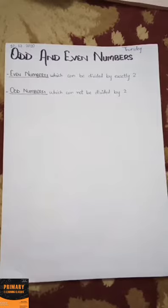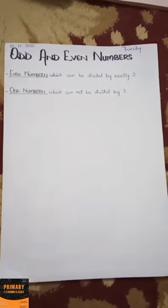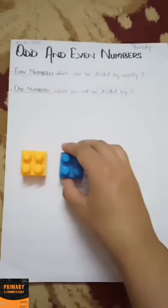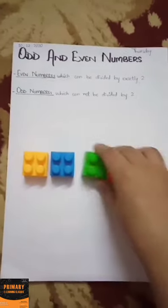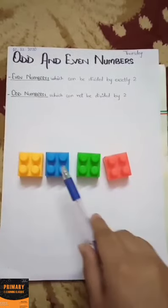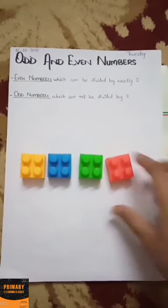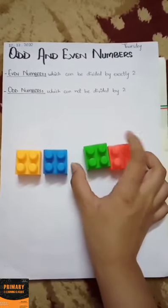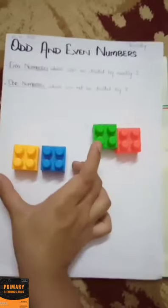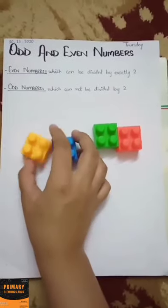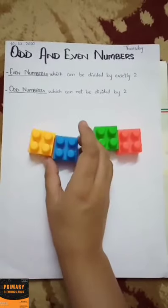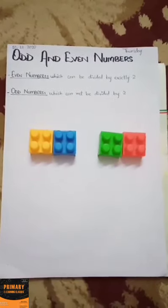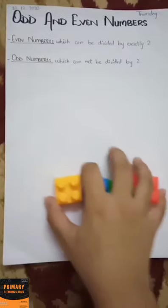Let's take an example of an even number. I have a few blocks — one, two, three, four. I have four blocks. Now I will divide these blocks into two equal groups: one, two — this is group one; one, two — this is group two. As you can see, I have divided these blocks into equal groups, so four is an even number.